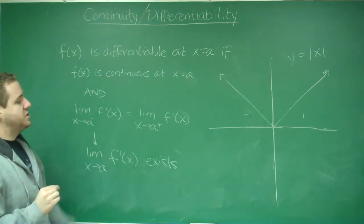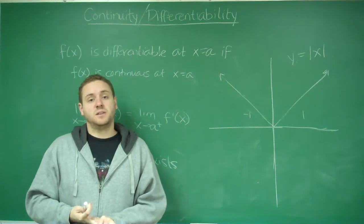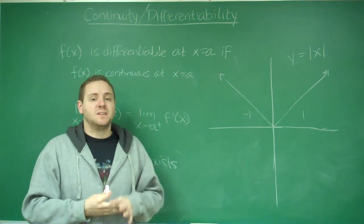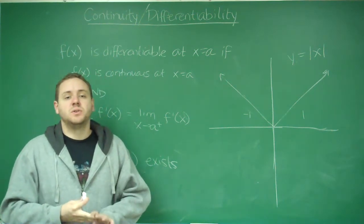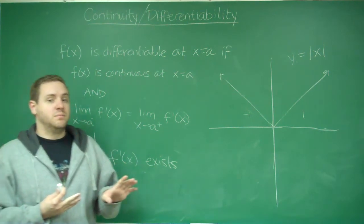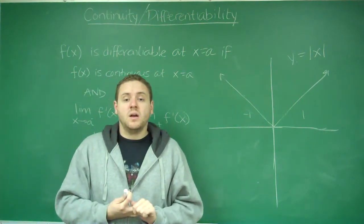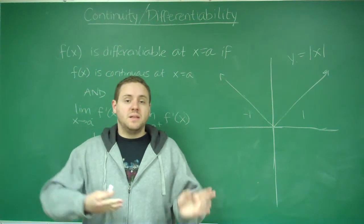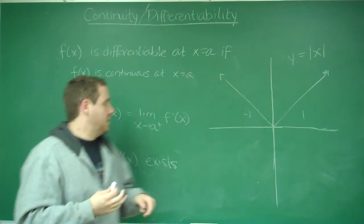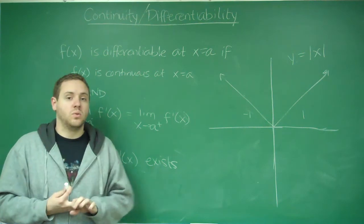Differentiability is a more specific case of continuity. Again, if something is not continuous, you can automatically conclude it's not differentiable. But if something is continuous, it then may or may not be differentiable depending on whether that slope condition holds.